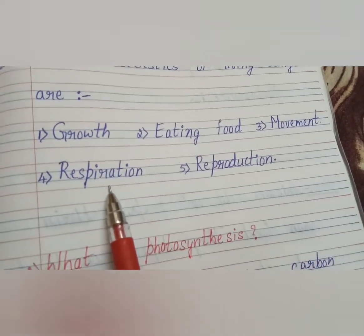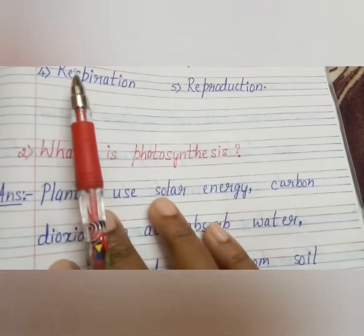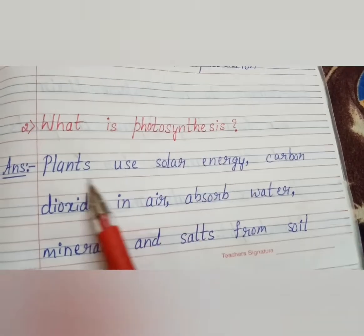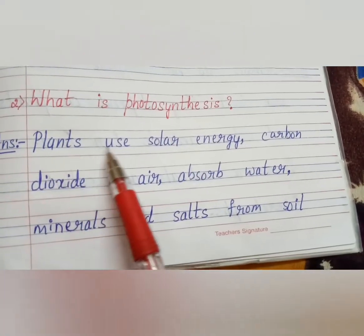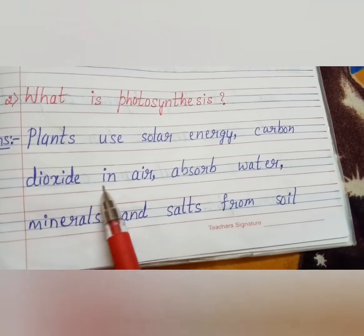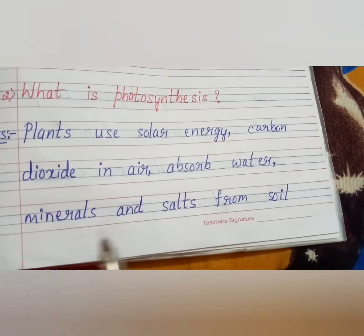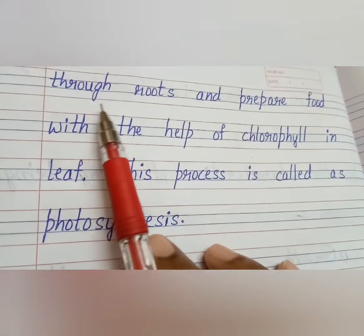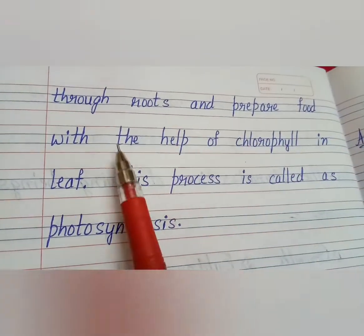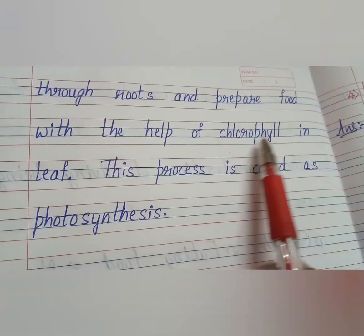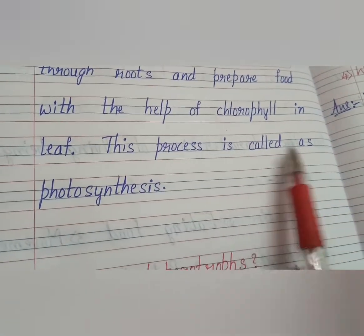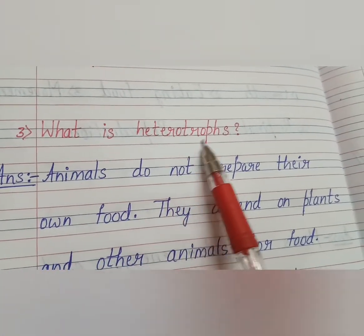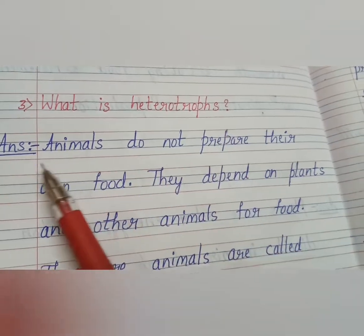Second question: what is photosynthesis? Plants use solar energy and carbon dioxide in air, absorb water, minerals and salts from soil through roots, and prepare food with the help of chlorophyll in the leaf. This process is called photosynthesis.